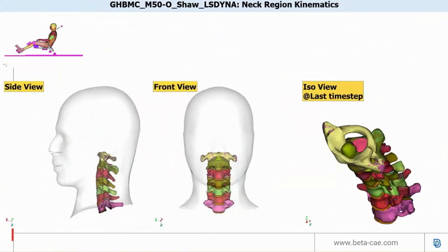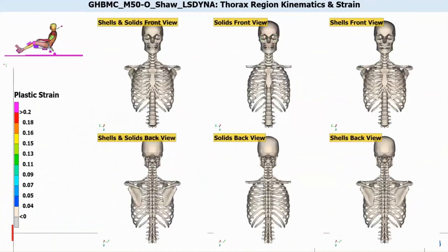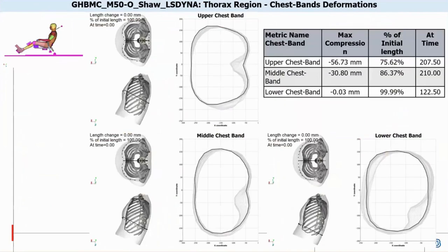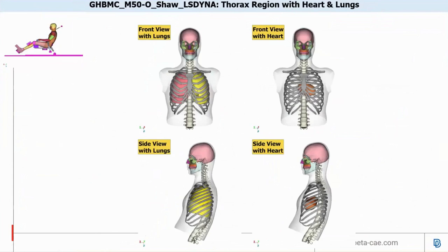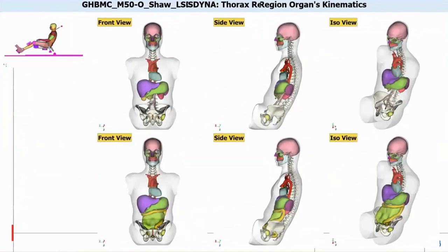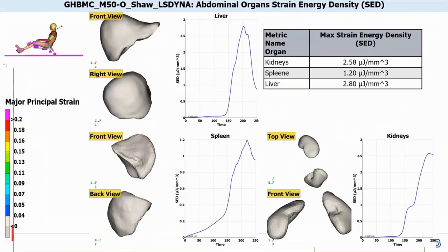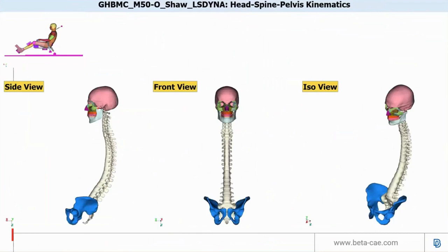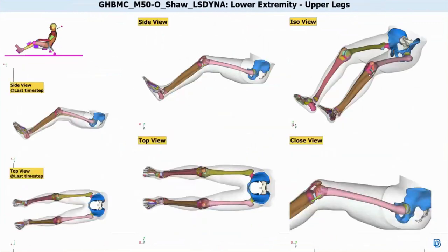The report also includes slides for neck region kinematics, kinematics of the rib cage area, thorax region kinematics and strain, chest band deformations, the thorax region with heart and lungs, internal organs kinematics, abdominal organ strain energy density, head-spine-pelvis kinematics, abdominal region lumbar kinematics, and the upper legs and lower extremities.